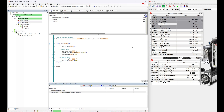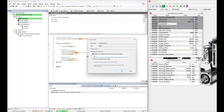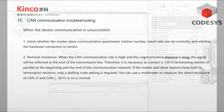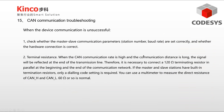This is the control case for servo CANOPEN. In actual operation, you can set it according to the process of the equipment. Now we are going to talk about common CANOPEN error troubleshooting. When device communication fails, you can check the following tips. First, check whether the master and slave communication parameters such as station number and baud rate are set correctly, and whether the hardware connection is correct.